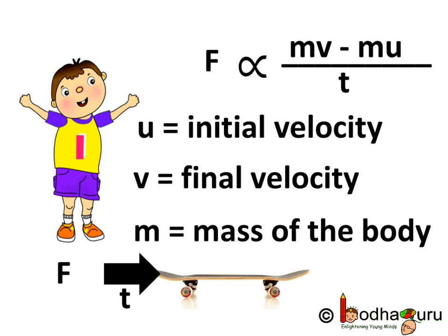So, initial momentum would be mu, final momentum would be mv and rate of change of momentum would be mv minus mu by t.